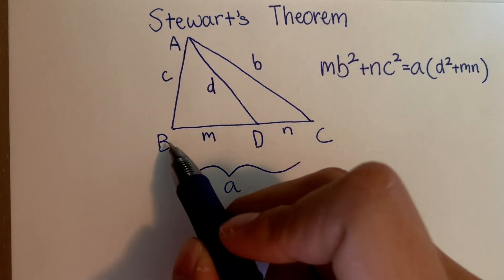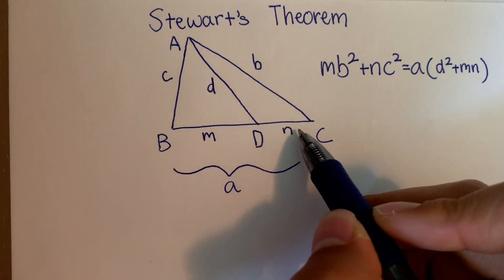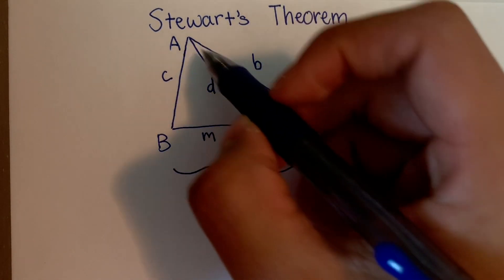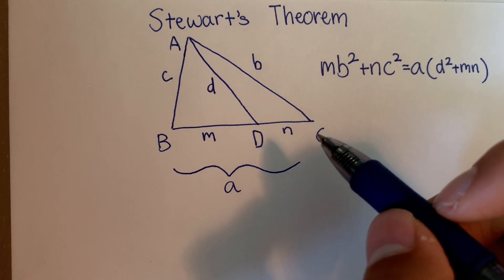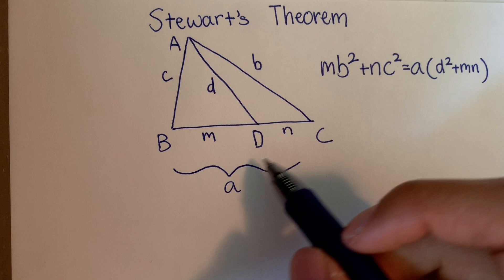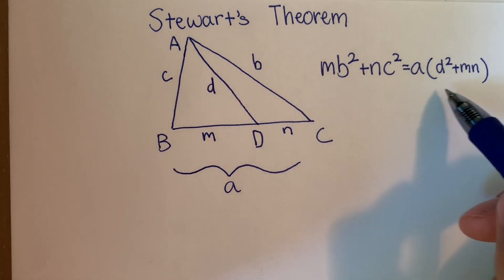In other words, if we can choose any point D on BC and construct segment AD, Stewart's Theorem will tell us the relationship between all of these side lengths with this formula.